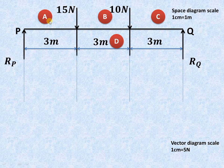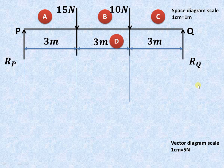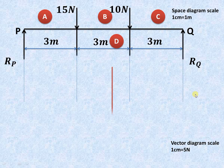We have to find out the length CD and length AD on the vector diagram in such a way that we'll get the values of RQ and RP respectively. We'll take a suitable scale for drawing these diagrams. The space diagram scale assumed is 1 centimeter equal to 1 meter, so 3 centimeters represents 3 meters.